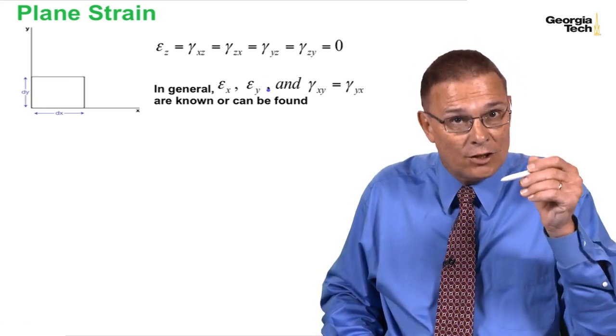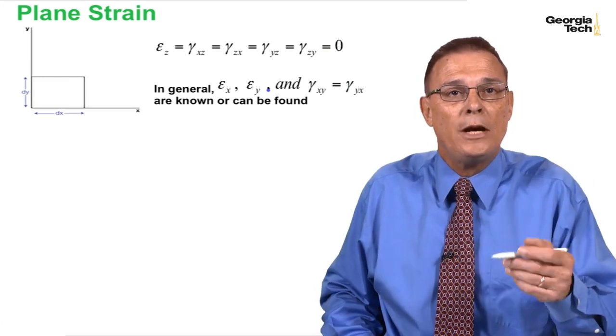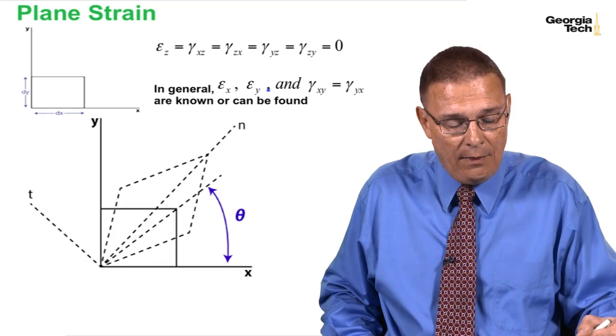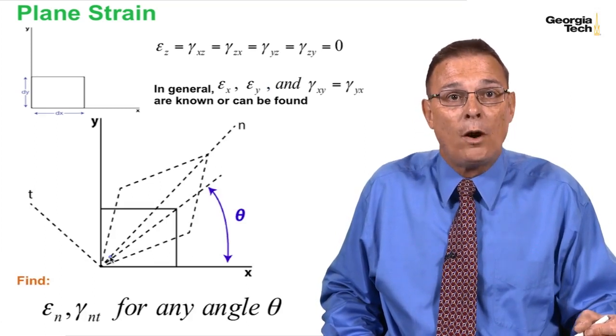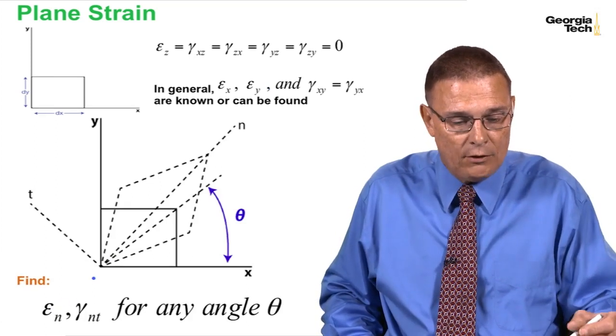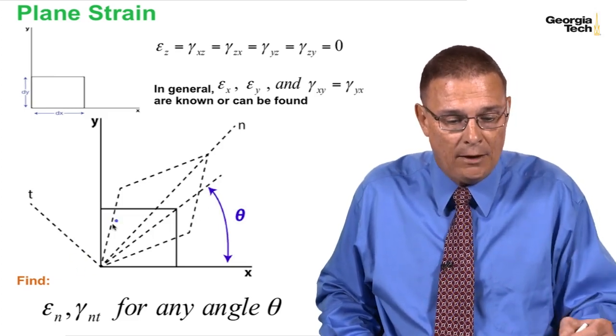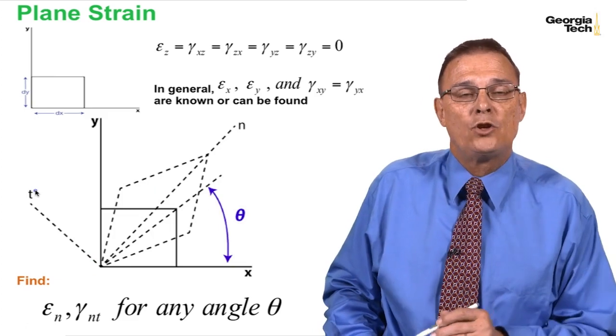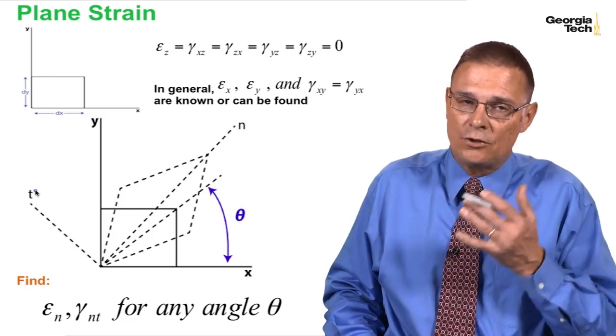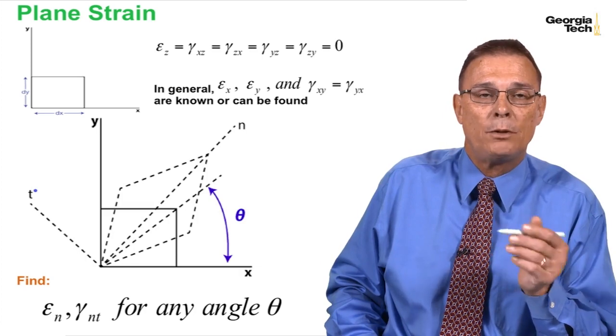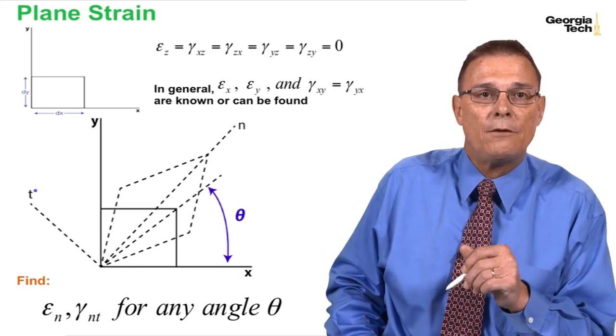In fact, in later modules we'll actually do that using something called strain rosettes. And once we find those, we can then transform to the normal stress and the shear stress for any angle theta for normal and tangential coordinates. And so this is very similar to the type of transformation that we did with stresses or plane stress. Now we're doing the same thing for plane strain.